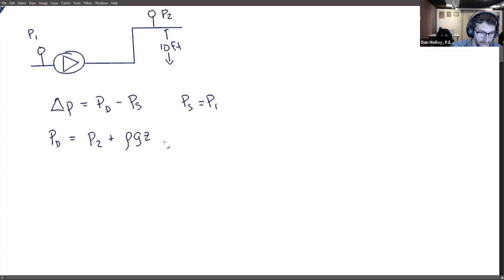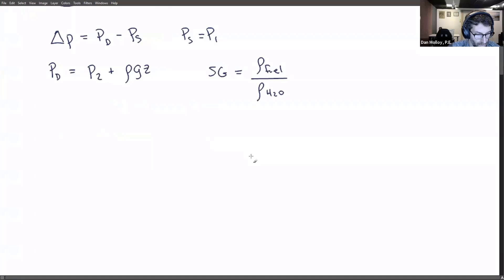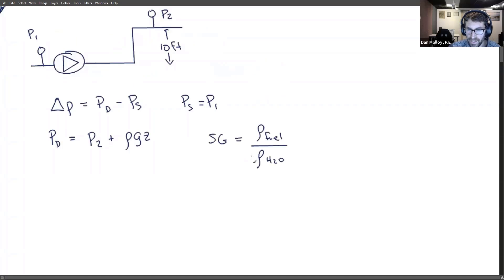And we probably would agree that we'll just neglect the velocity. So the specific gravity comes into play when we're dealing with the density. Because the density of, if there's some specific gravity that's not one, then the specific gravity means that the density of, in this case, fuel, is going to be only a fraction of the density of water.